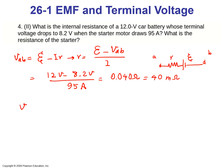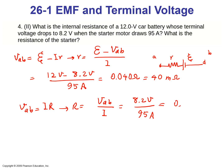The resistance of the starter is found from VAB equals IR, so R equals VAB divided by I. We have 8.2 volts divided by 95 amperes, which gives us 0.86 ohms. This is the resistance of the starter.